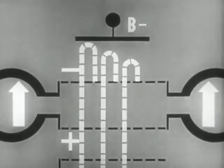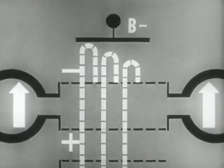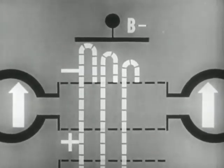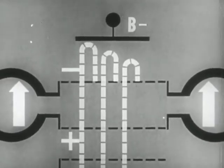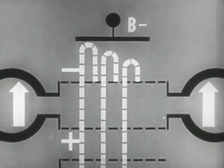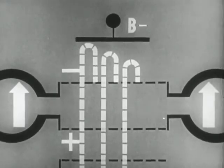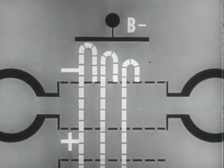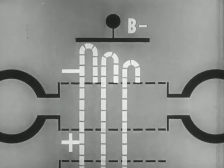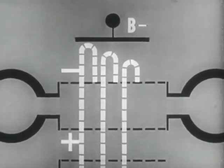One bunch is produced for each oscillation of the cavity. If this bunch returns when the voltage across the buncher grids is such that it slows them down, they will give up energy to the alternating field. If the voltage is maximum decelerating, they will give up the maximum energy, and the oscillator will produce the maximum output.